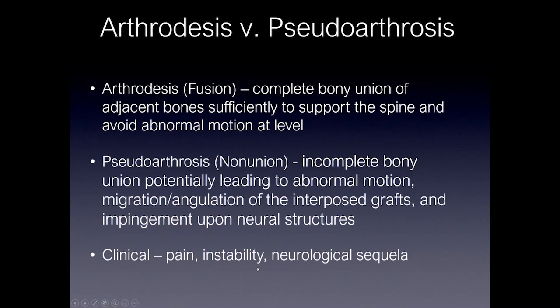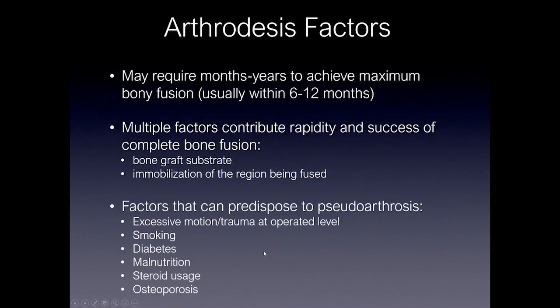Arthrodesis and pseudoarthrosis are two important entities — really the primary purpose of these surgeries. Arthrodesis is defined as fusion: complete bony union of the adjacent bones sufficiently to support the spine and avoid abnormal motion at that level. Pseudoarthrosis, or non-union or non-fusion, is when there's incomplete bony union that can lead to abnormal motion, migration or angulation of the grafts, and impingement of the neural structures. Clinically, patients who have non-union can have pain, instability, and neurological sequelae.